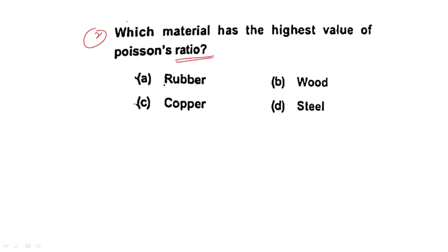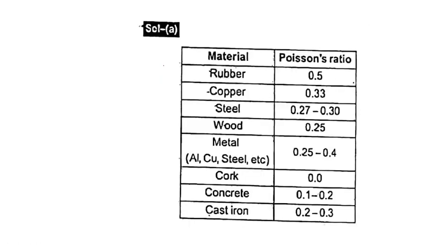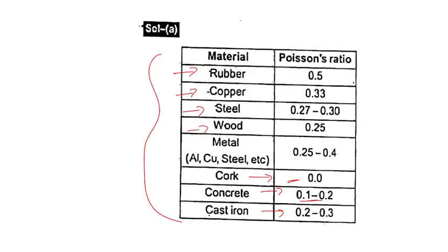Question two: Which material has the highest value of Poisson's ratio? The answer is rubber — rubber has the highest Poisson's ratio. For reference: copper is 0.33, steel is 0.27 to 0.3, wood is 0.25, cork has the minimum value of zero, concrete is 0.1 to 0.2, and cast iron is 0.2 to 0.3. You must remember these values — this type of question can be asked at any exam level.